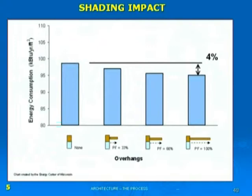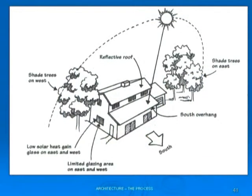Putting it all together: you have a south view with windows that open up to the winter sun. You have some trees on the east and on the west that protect the building from the very low sun angle, because when the sun is very low, a projection is not going to help. Some of the things we look at are low solar heat gain glass on the east and west side. We'll also look at reflective materials or light-colored materials on a roof to reflect the heat, as opposed to dark color which absorbs that heat.